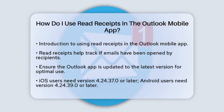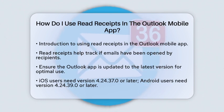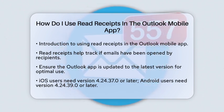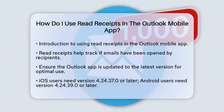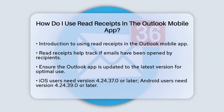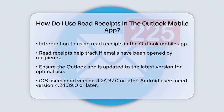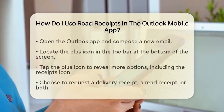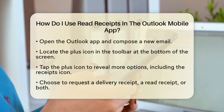First, make sure your Outlook app is updated to the latest version. For iOS, you need version 4.2437.0 or later. For Android, ensure you have version 4.2439.0 or later. Keeping your app updated is essential for accessing the latest features, including read receipts.